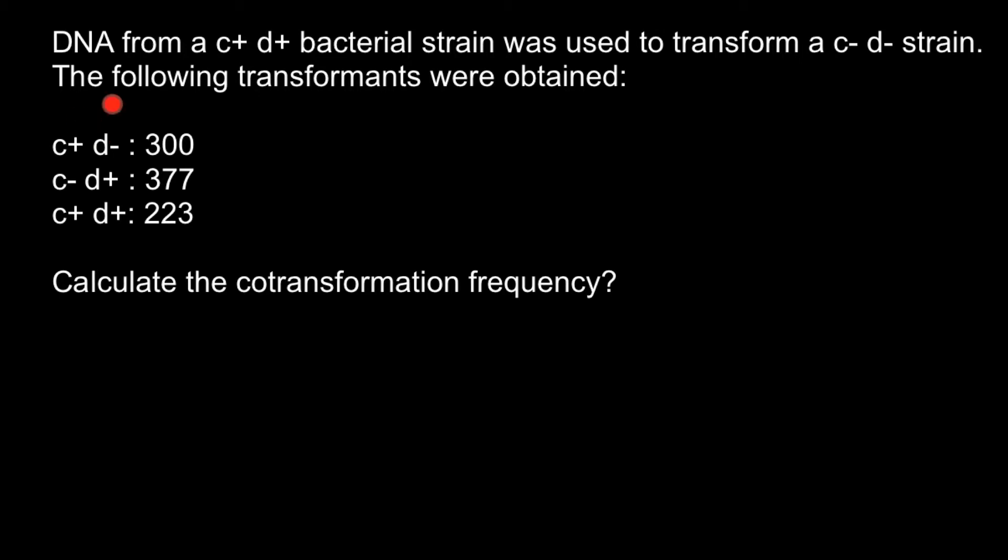We see the frequency of the transformants obtained and here is the genotype. Imagine that here we have a bacterial cell and here is the circular DNA, and here would be a genotype that is C-positive and D-positive. And somewhere here a bacteriophage would attach.